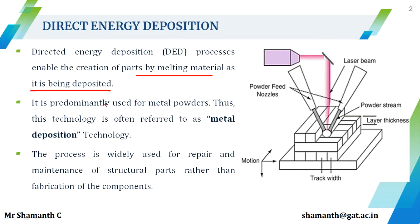It is predominantly used for metal powders. Though this process can be used for polymers, ceramics, and metal matrix composites, since it is used predominantly for metal powders, this process is also called the direct energy deposition process or metal deposition technology.